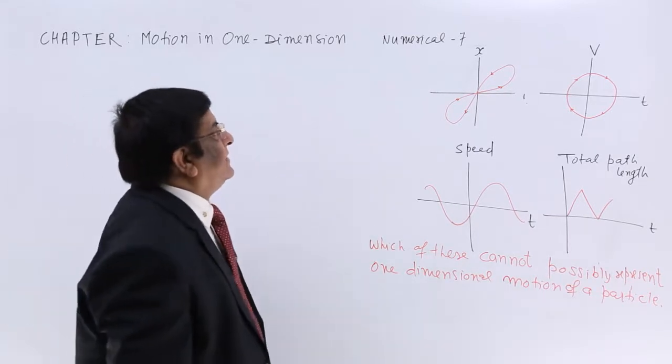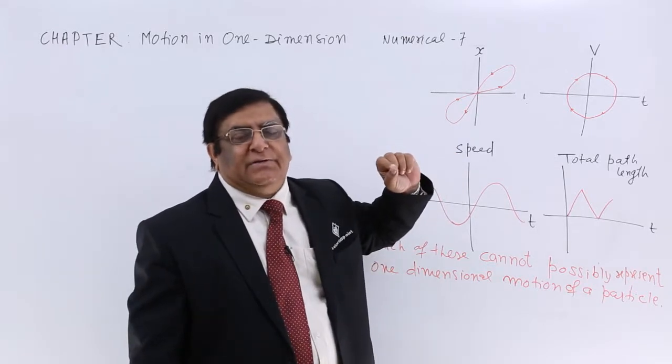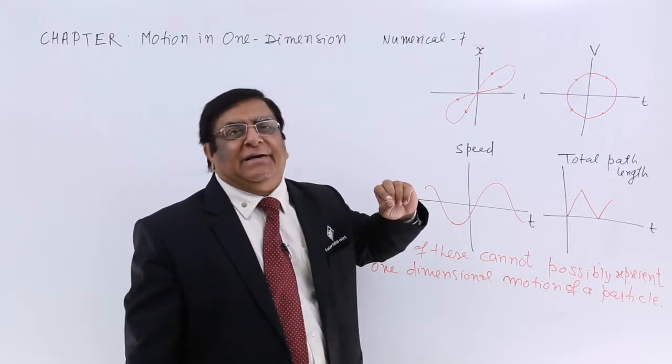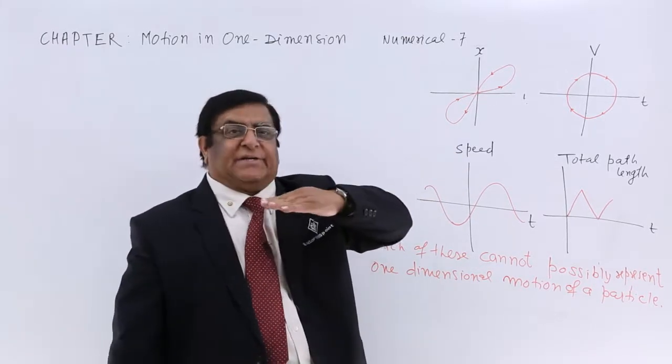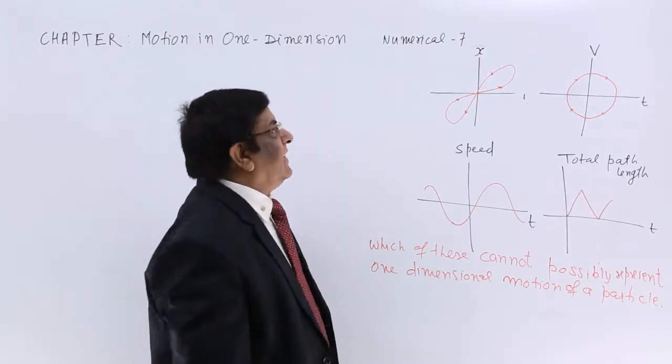First, the very first thing in a graph we should see is what is represented by the axis, what is represented by the height, and what is represented by the distance in positive direction.